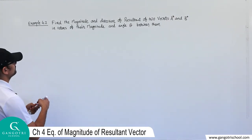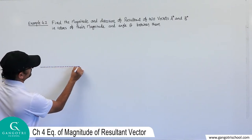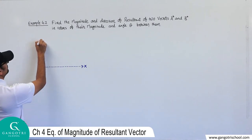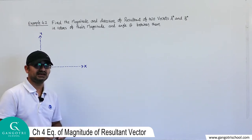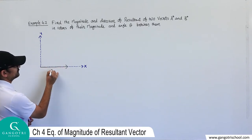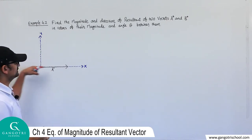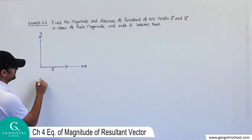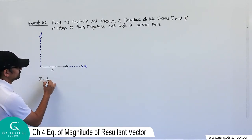Let's draw the diagram. Consider this is the x-axis and this is the y-axis — the xy plane. Let's assume two vectors A and B. Vector A is exactly parallel to the x-axis; it has only one component. So we can write vector A equals Ax·î.